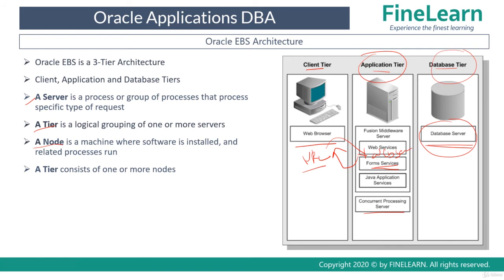Now, what is a node? A node is a physical machine where your software is installed and the actual process is run. One more important point to understand is that a tier consists of one or more nodes. We will see examples of how this can be interpreted and applied to real-time deployments.